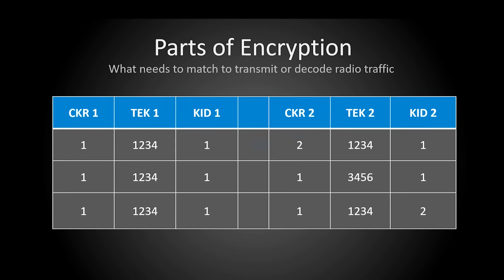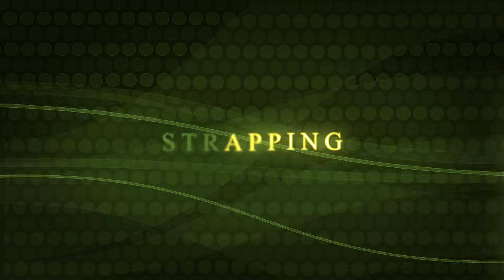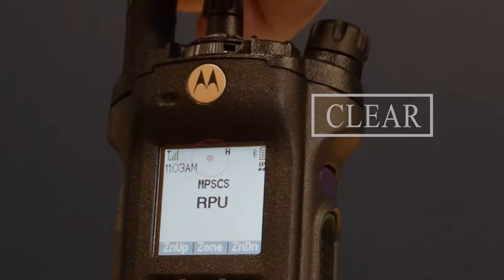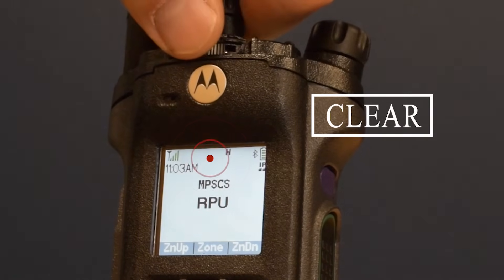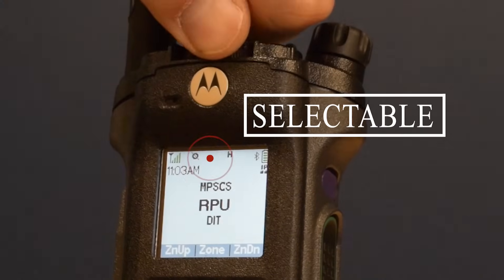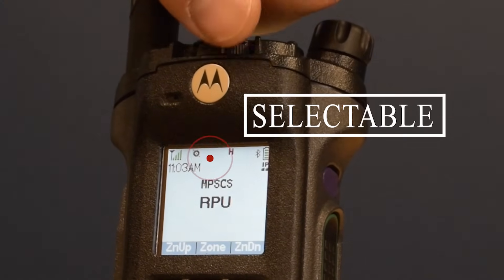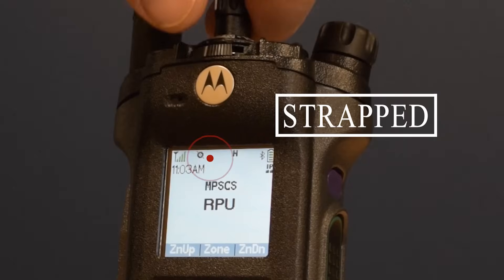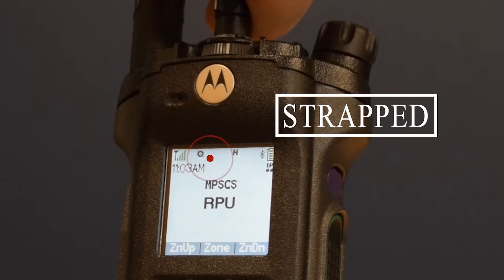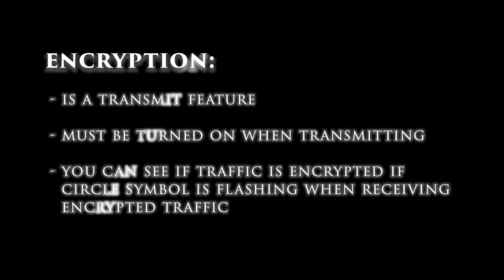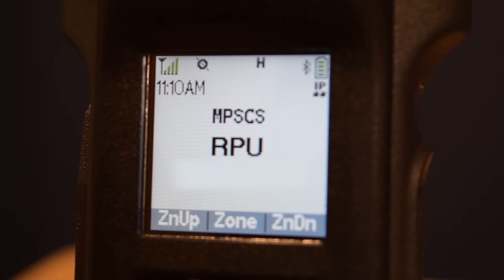The KID and the TEK must be the same in both transmitting and receiving to decode the radio traffic. Strapping is used to tell the talk group in the radio how it will be encrypted. Clear will only transmit clear traffic and cannot change. Selectable can either be clear or encrypted and is changeable with a button or switch. Strapped will only transmit encrypted traffic and cannot be changed.